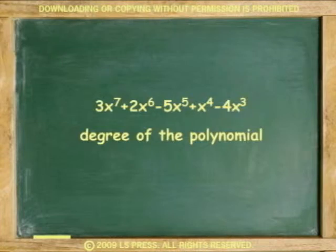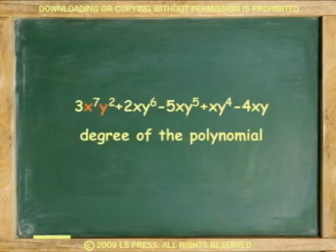Now let's talk about the degree of the polynomial. The degree of the polynomial is established by the largest exponent found in any one term of the polynomial. If the term has more than one variable, we add the exponents of that term to determine the degree of the polynomial.